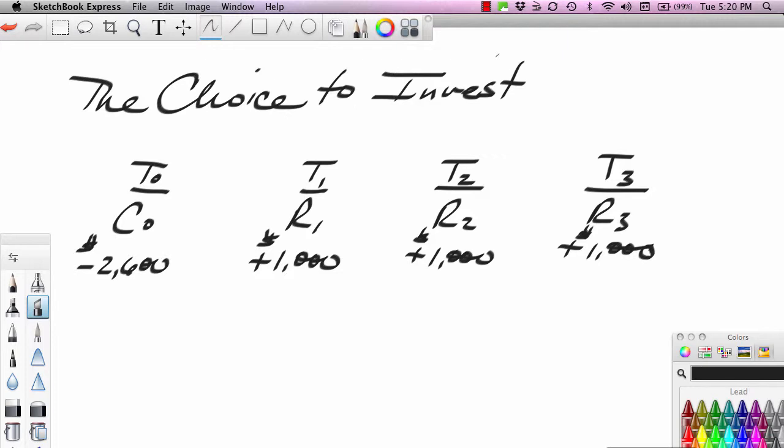In order to compare future returns, these R's here that we see in time period 1, 2, and 3, to present costs incurred in the present, we need to discount or somehow take these future returns and convert them back into their present value. We can compare a present cost to a future return that has been translated back into its present value.